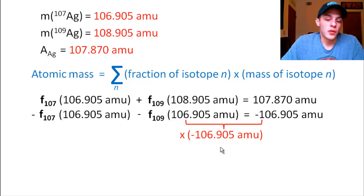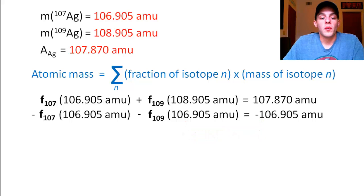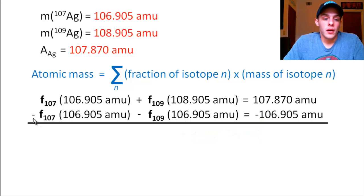So you may be asking yourself, well, why did I choose this term? Well, the reason why I chose this term is so that when we add the equations together, the f₁₀₇ terms, the fraction of silver-107 terms, those are going to cancel out when we add them. Right?